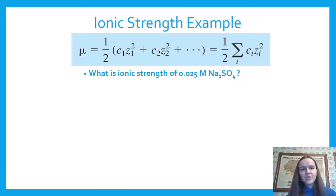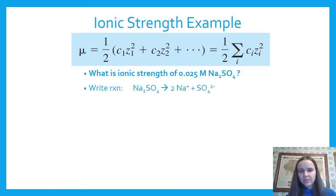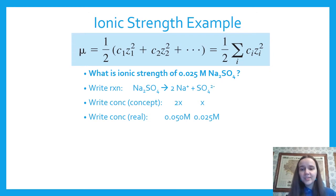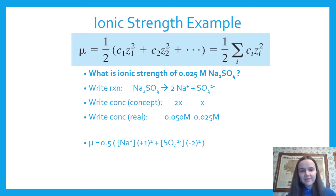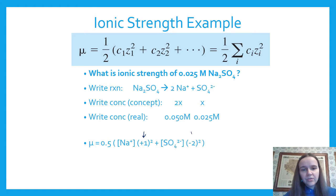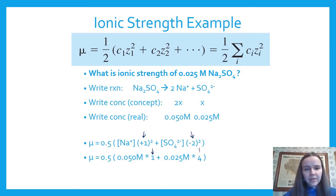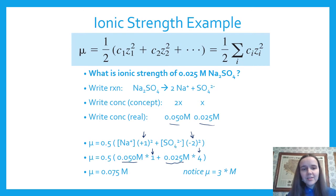Example: what is the ionic strength of 0.025 molar sodium sulfate? Sodium sulfate dissolves to make two sodiums and one sulfate, giving 0.05 M Na⁺ and 0.025 M SO₄²⁻. Plugging into the formula: μ = ½ × ([Na⁺] × 1² + [SO₄²⁻] × (−2)²) = ½ × (0.05 × 1 + 0.025 × 4) = 0.075. That is three times the original concentration of 0.025 M.